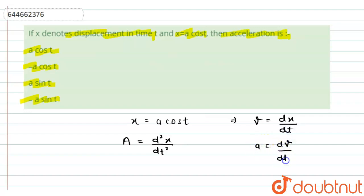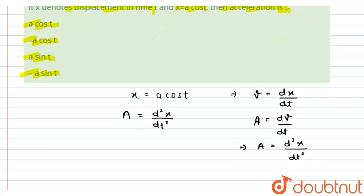Hence we can directly write the acceleration as the second derivative of the displacement with respect to time. So we have the acceleration equals d²/dt² of a cos t.